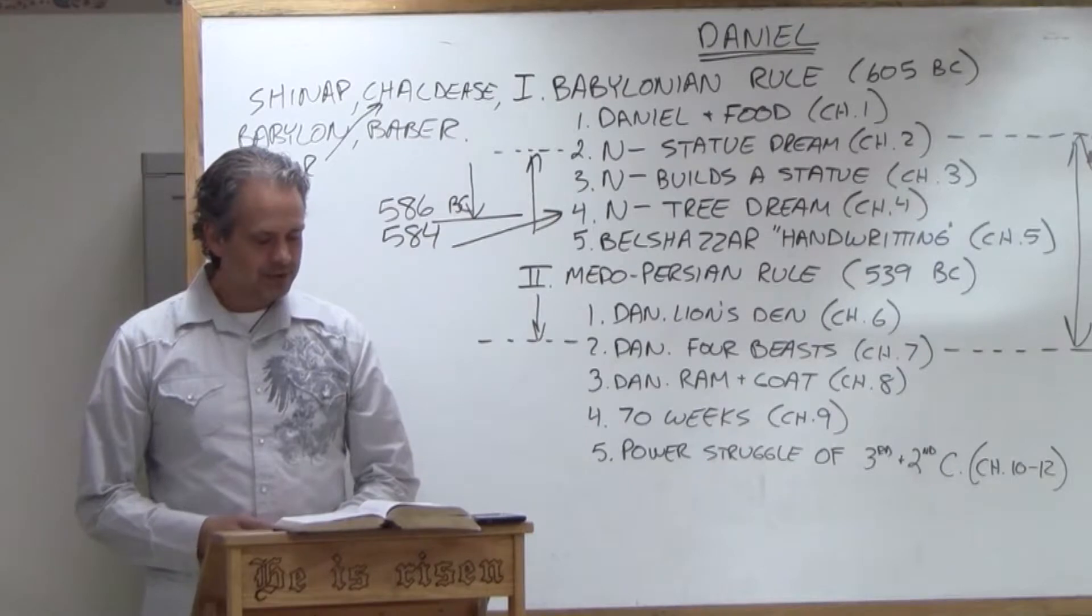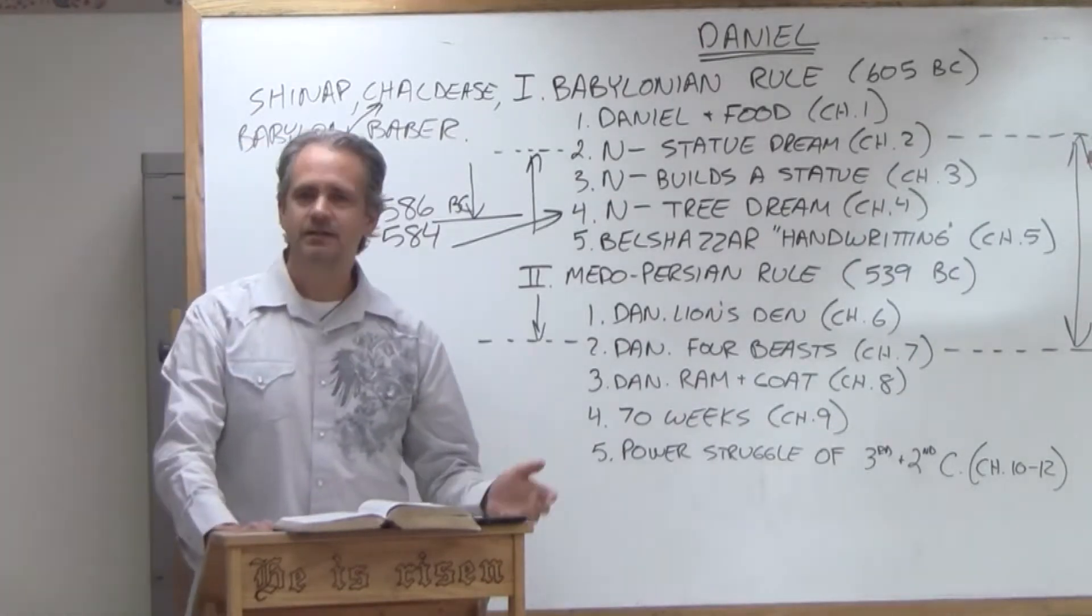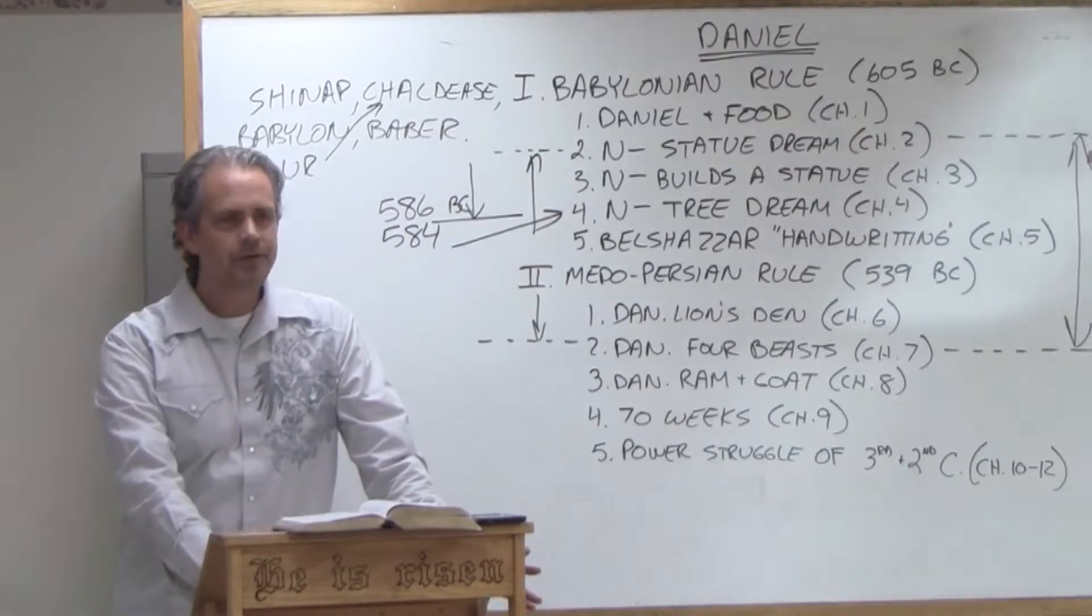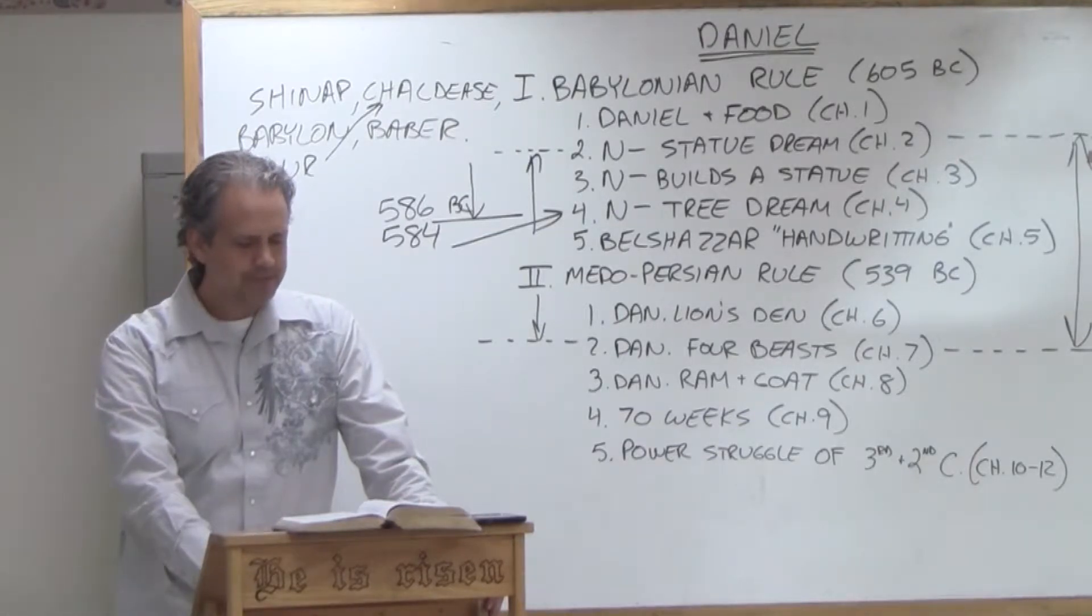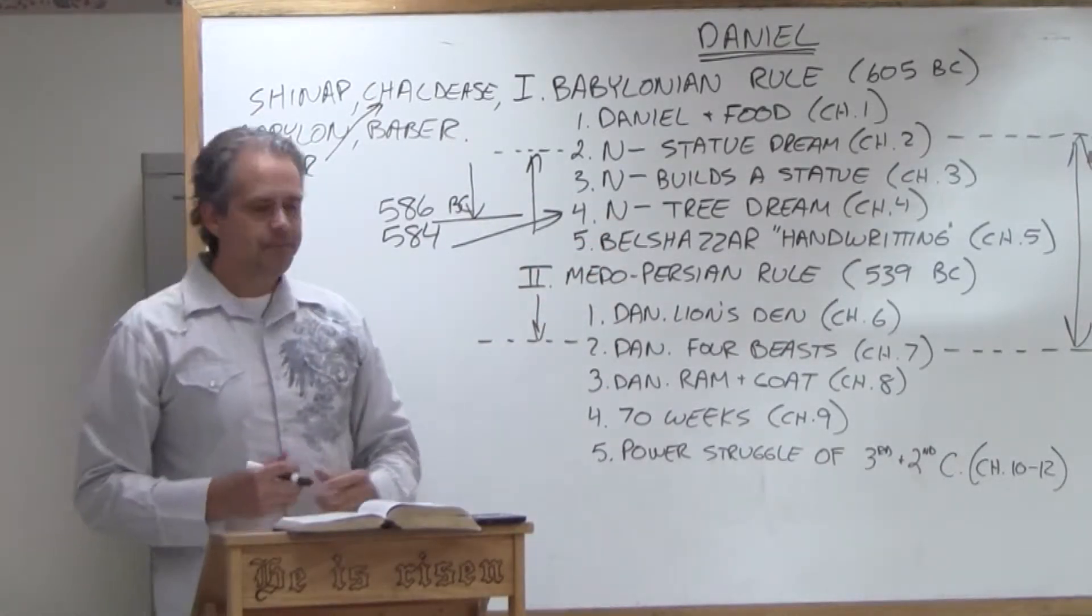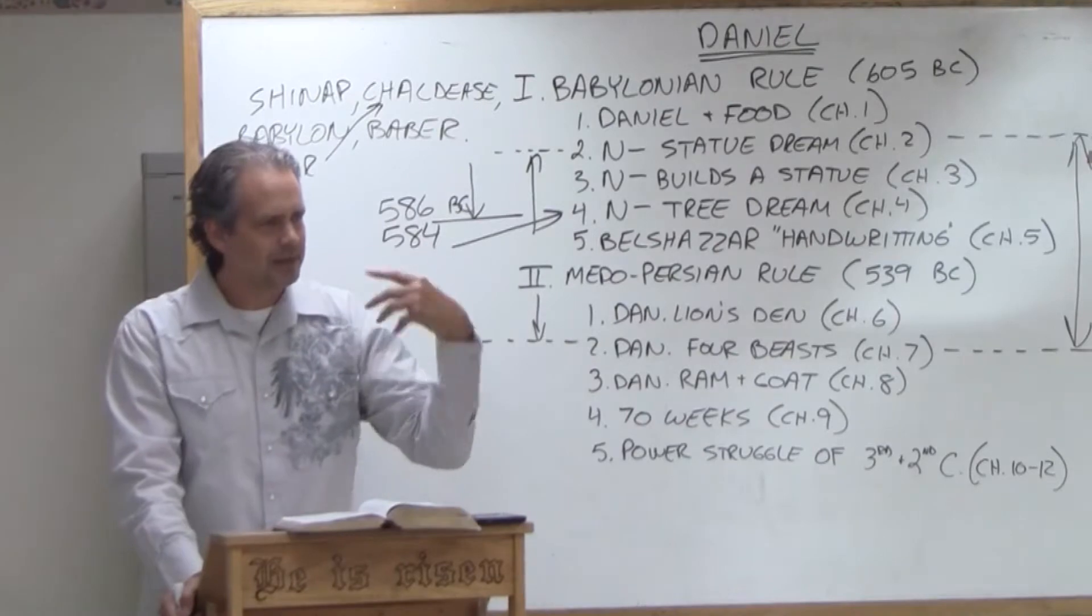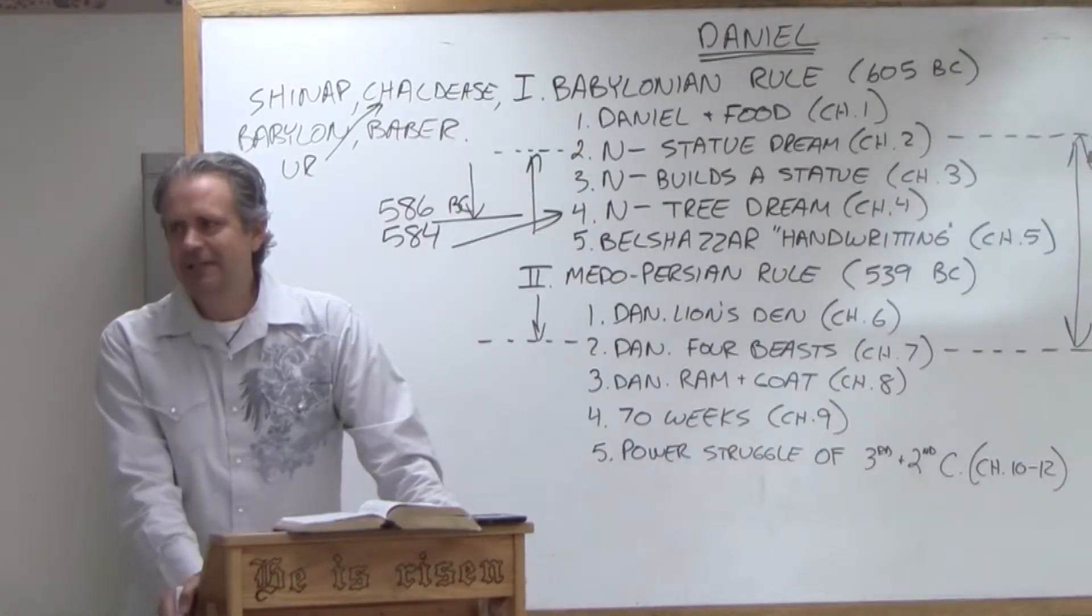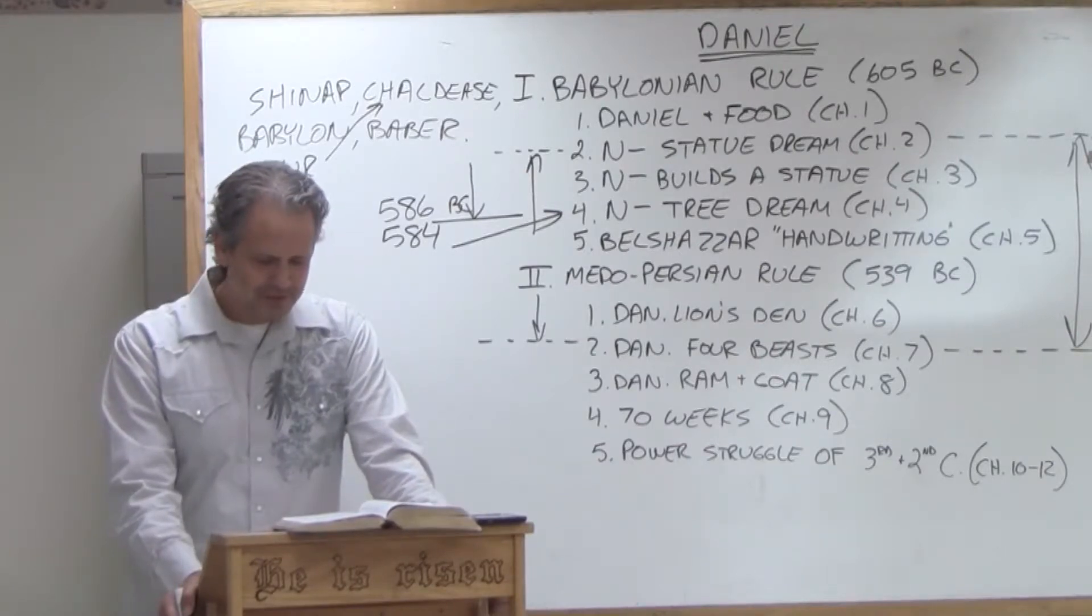Nebuchadnezzar is going to die in 562, and there are several Babylonian kings that come into play before Belshazzar. Belshazzar is the next Babylonian king we see, but a lot of years pass here. There are several kings, evil Marduk and some other guys. But this one guy named Nabonidus. Nabonidus becomes a king after this tree dream. And then for some reason, Nabonidus decides to go off to Arabia for 10 years. While he's in Arabia, he leaves his son Belshazzar in charge. And that brings us to the next section of our story, chapter 5.